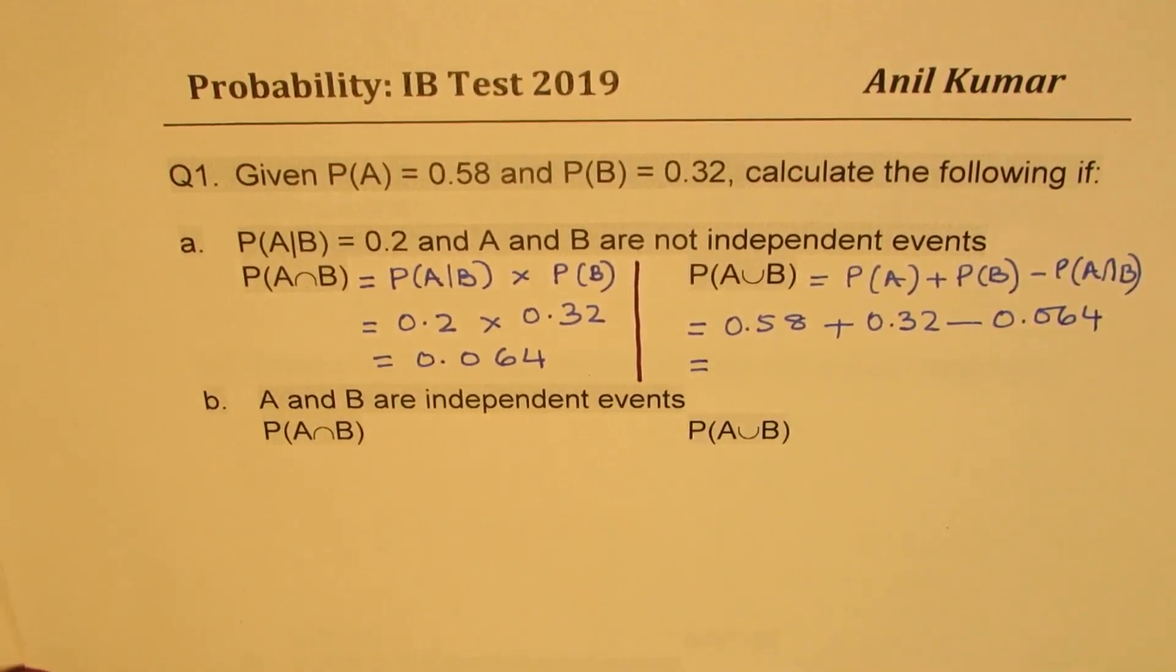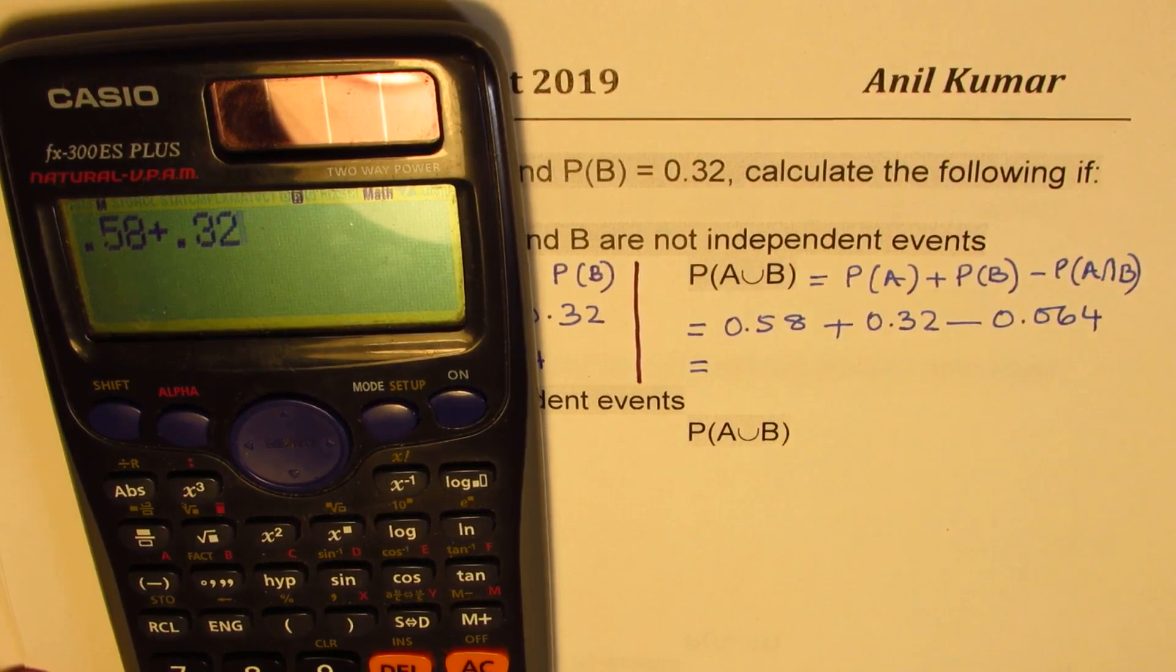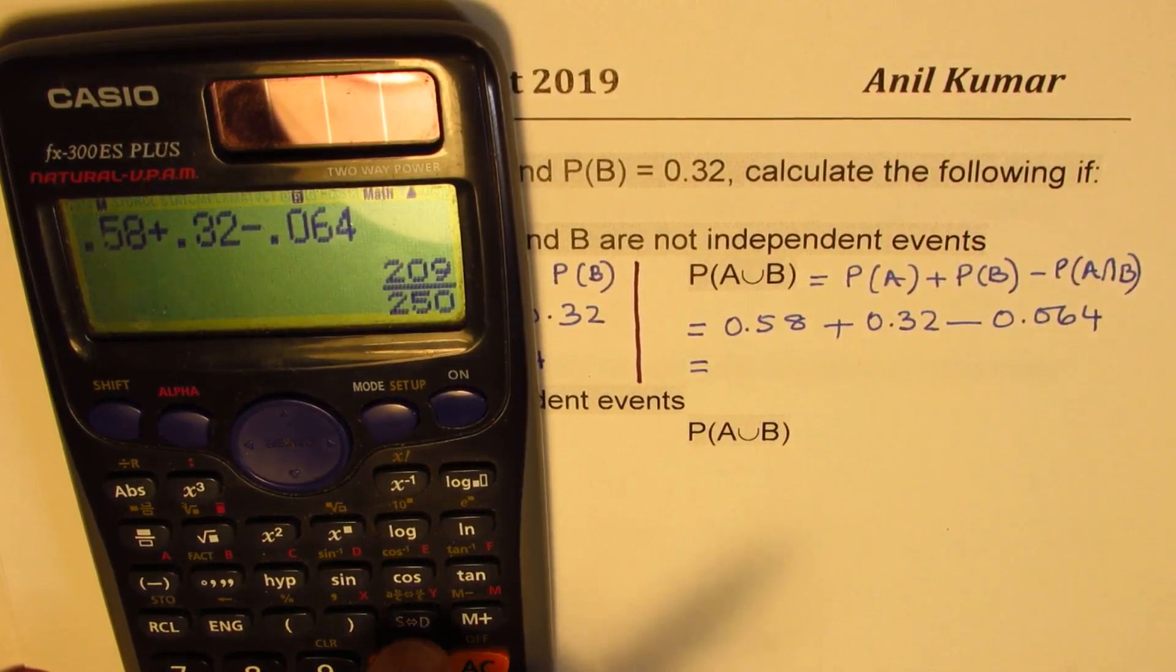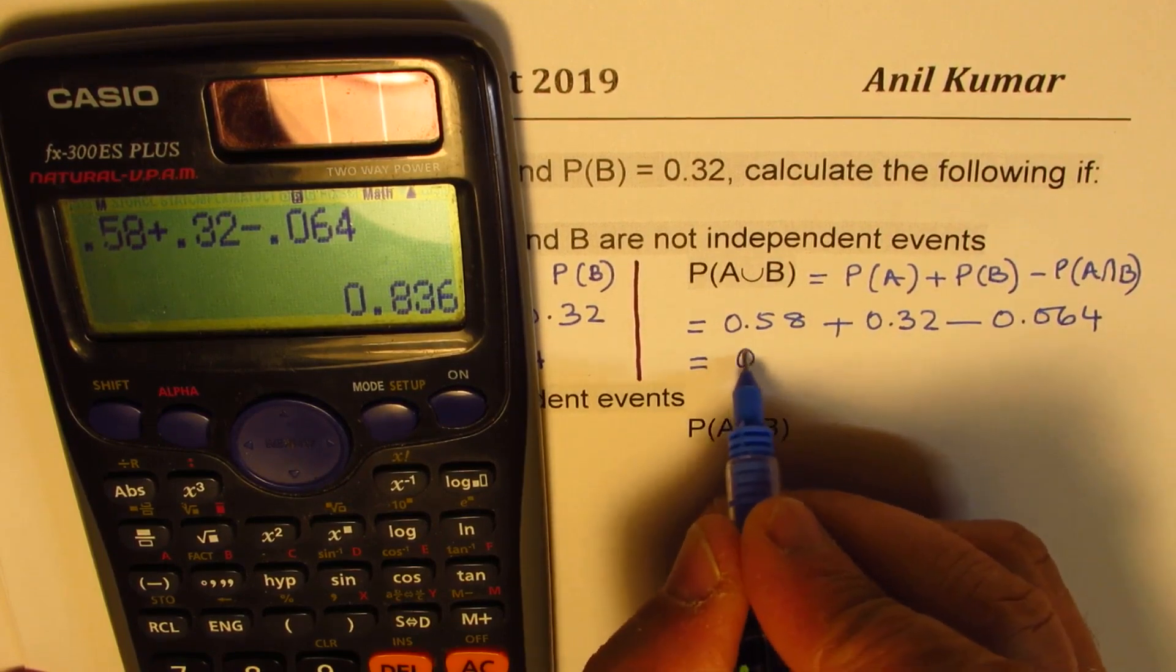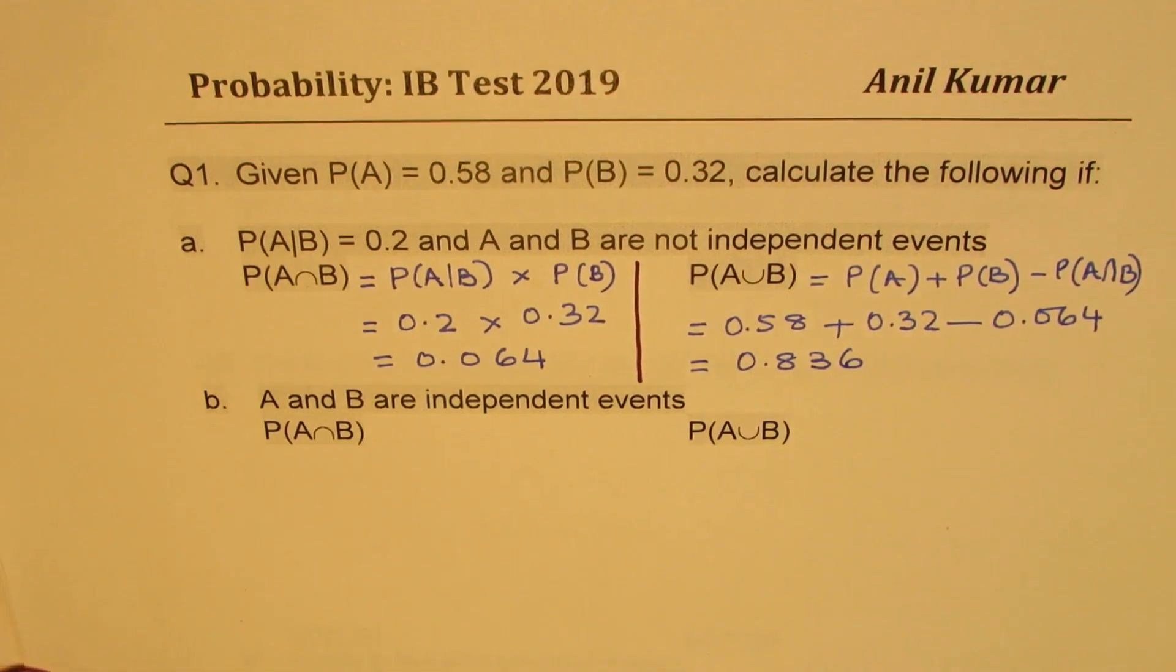Let's use calculator to find these answers. So 0.58 plus 0.32 minus 0.064 equals two decimals, 0.836. So that becomes the answer.